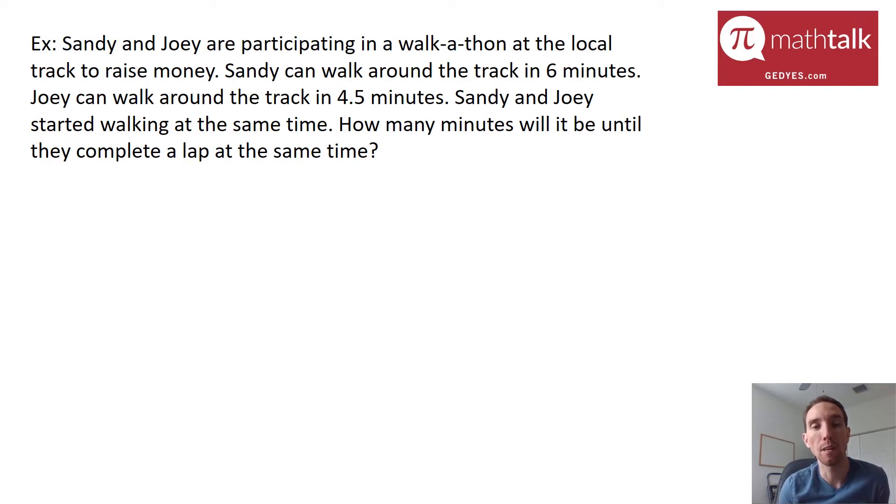This is a word problem where I don't necessarily need algebra to solve. I really need to use logic and visualize what's happening. We have two people walking around a track. They start at the same time, they're going at different paces, but at some point they're going to cross the finish line of the lap at the same time. To visually represent what's happening, take a look at this diagram.